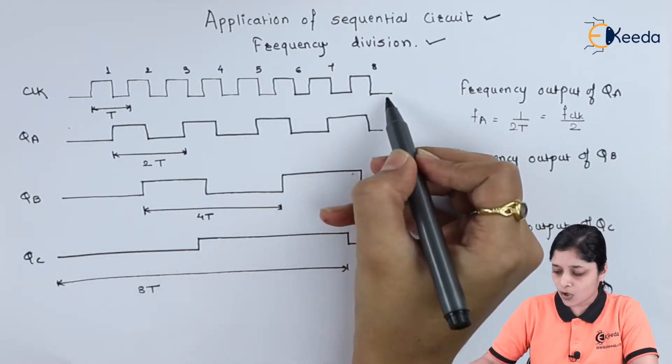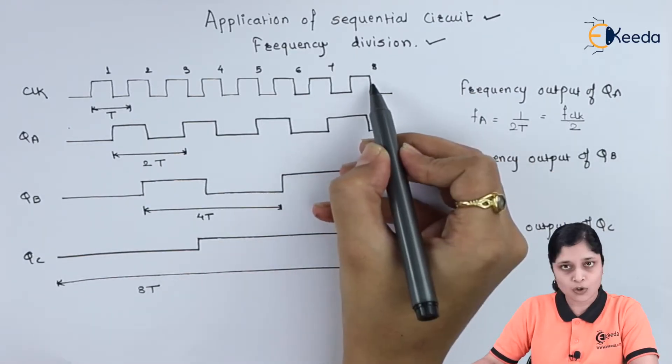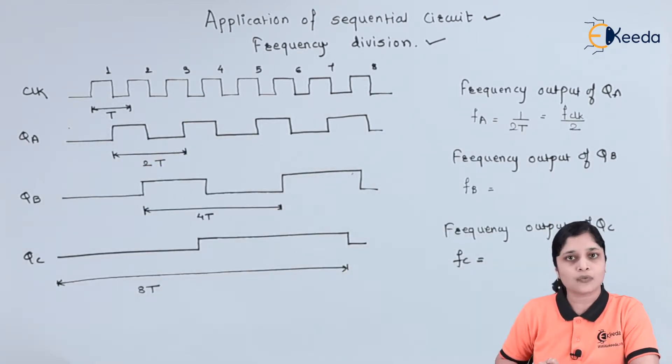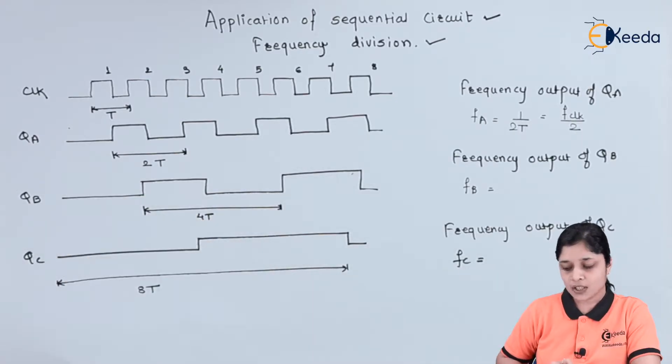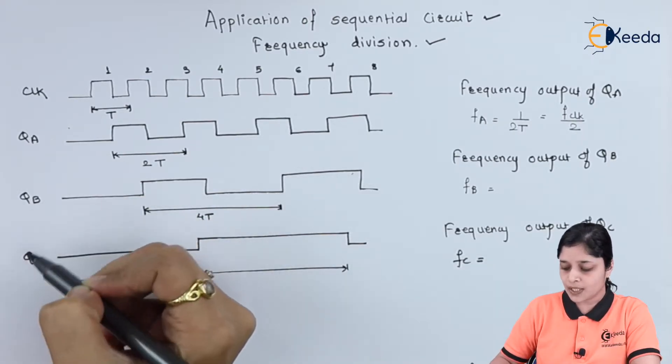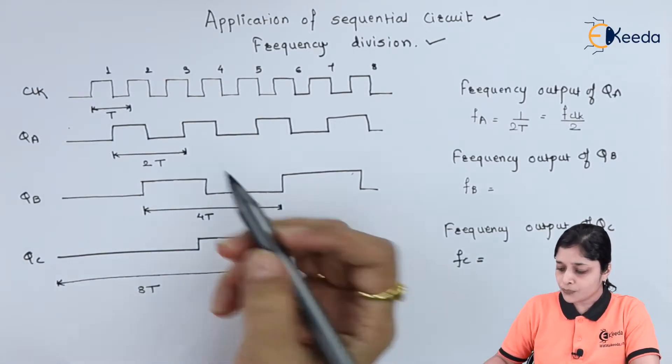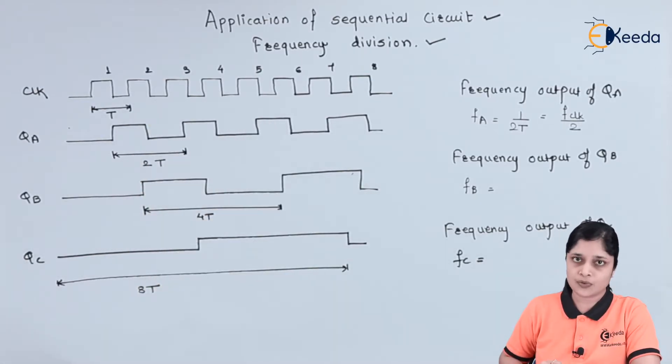This is your clock signal having eight clocks. This time represents the period of one cycle that is T. Now these are the outputs of three flip-flops: QA, QB, and QC. These are negative edge triggered flip-flops.